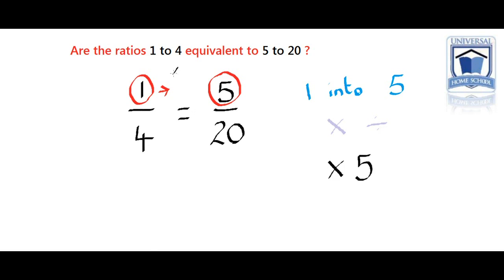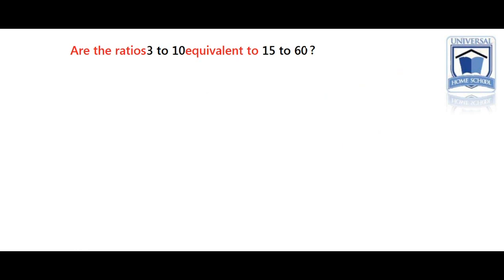To get 5, I multiplied 1 times 5 equals 5. Now, if that works for the 4, and we can use 5 for both the 1 and the 4, then yes, they are the same. And yes, it does work. 4 times 5 equals 20. That's 5 over 20. So yes, the ratios 1 to 4 is equal to 5 to 20.